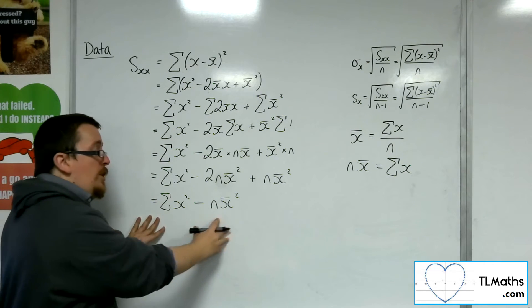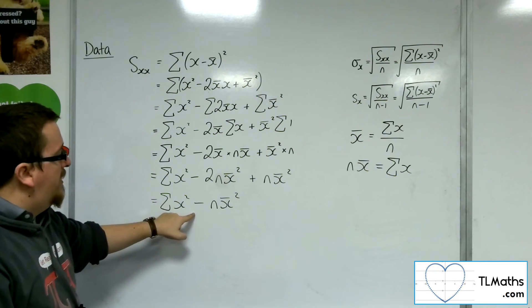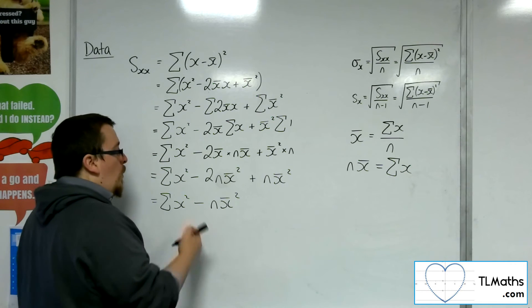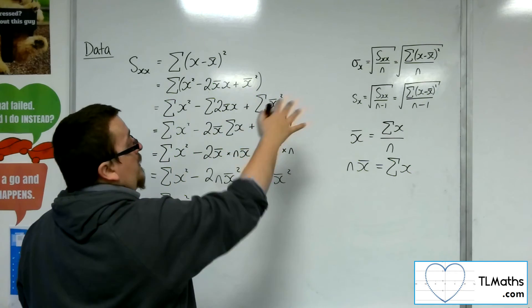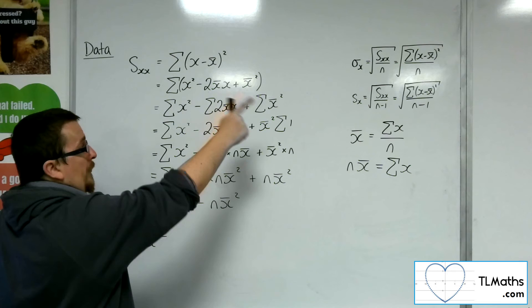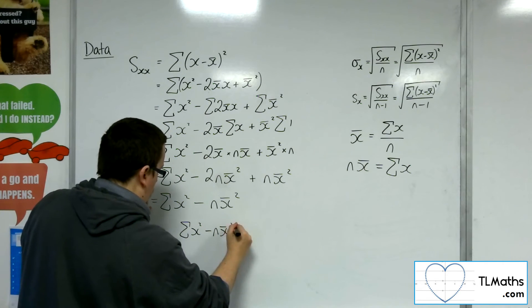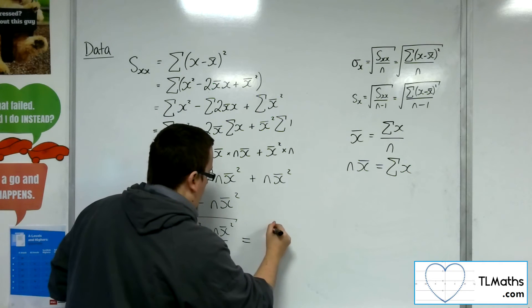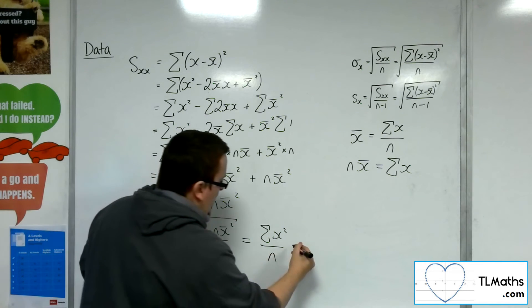So we now have a new formula for SXX. This alternative formula for SXX is easier to work with, because the summation of x squared is easier to find, and then I just take away n — however many data points there are — times the mean squared. That does the following to the formula for sigma x: sigma x is the square root of the sum of x minus x-bar squared divided by n, which I can now rewrite as the square root of the sum of x squared over n, splitting the fraction apart, and cancelling the n's to leave just minus the mean squared.